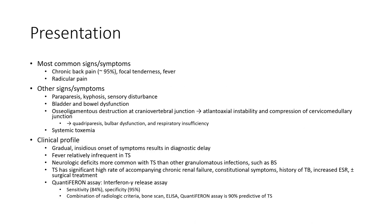The most common signs of spinal tuberculosis are vertebral tenderness at 95%, radicular pain. Other signs and symptoms are paresis, kyphosis, sensory disturbance, and bladder and bowel dysfunction.